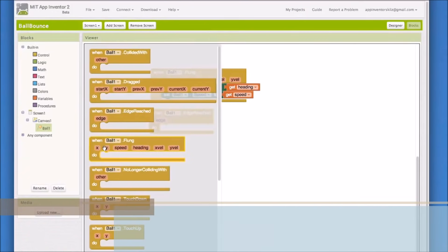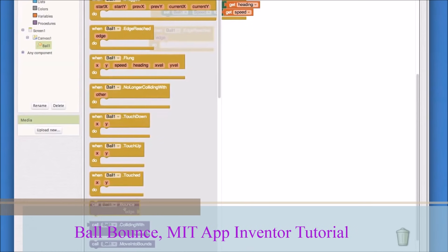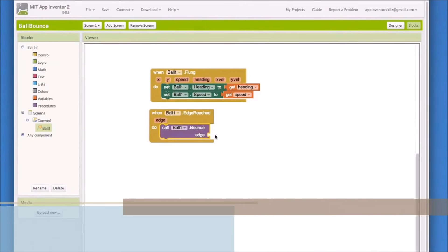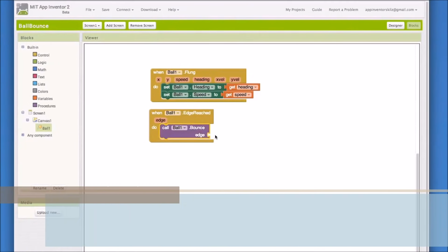Go back into the ball blocks and drag out the call ball1.bounce block. Notice that this bounce block takes an edge as an argument. Where can we get that edge value, do you think?